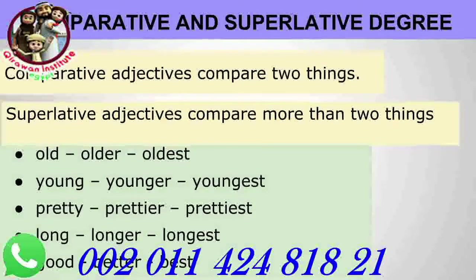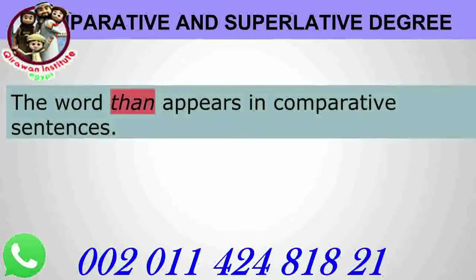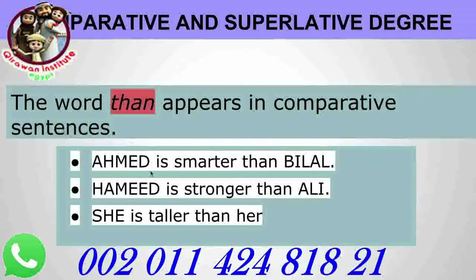For example, in English we have: Old, Older, Oldest; Young, Younger, Youngest; Pretty, Prettier, Prettiest; Good, Better, Best. There are different ways to compare using superlative degrees. In comparative, the word 'than' appears in sentences - for example: Ahmad is smarter than Hamid, Hamid is stronger than Ali, she is taller than her.